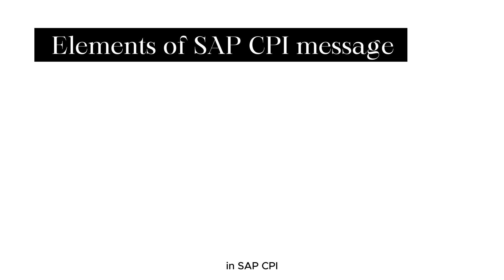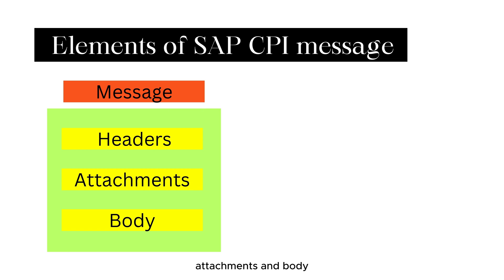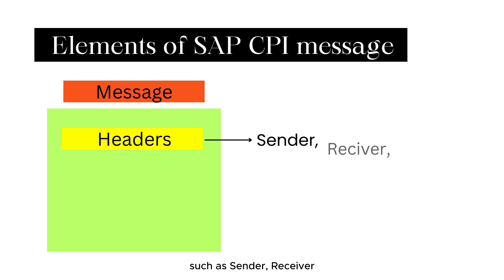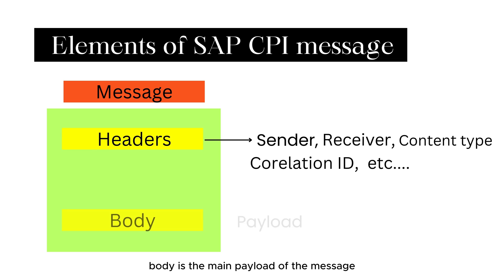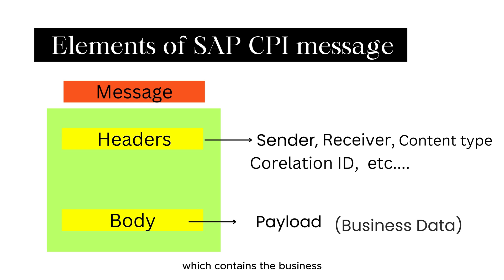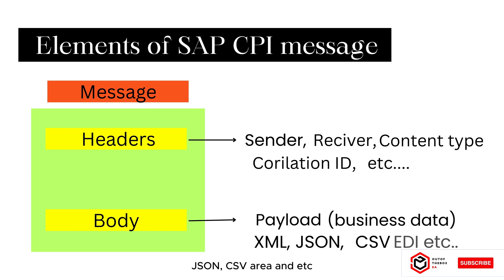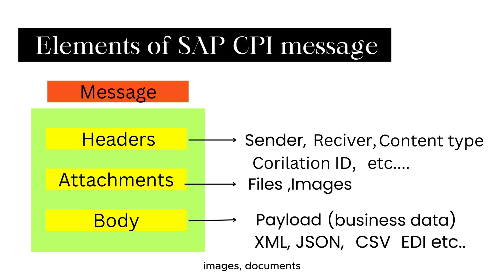Let's talk about the main elements of the SAP CPI message. In SAP CPI the message is composed of headers, attachments and body. Headers are a key-value pair that contains information related to the messages such as sender, receiver, content type, correlation ID, etc. Body is the main payload of the message which contains the business-related data being transferred. A body can be of any type such as XML, JSON, CSV, EDI, etc.